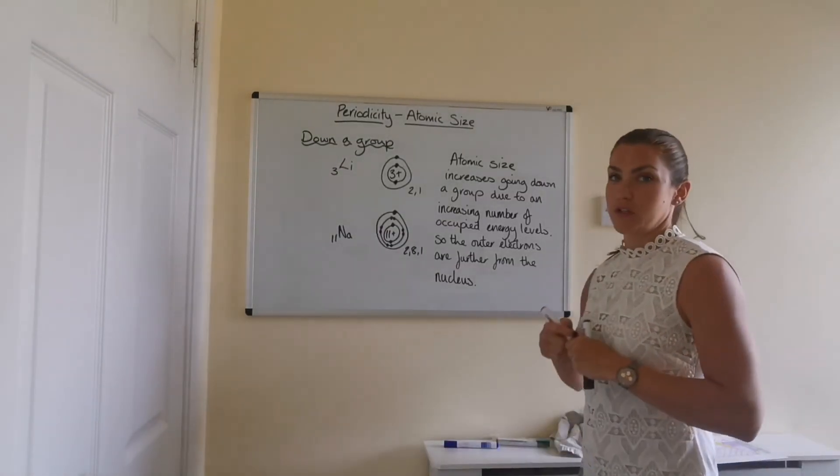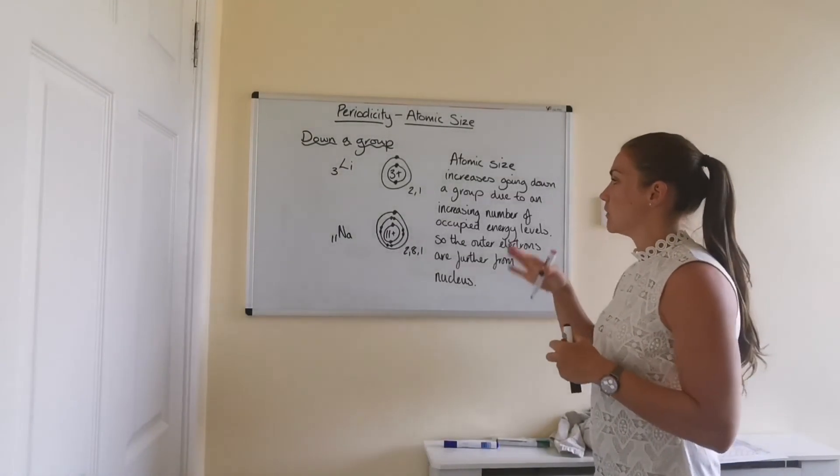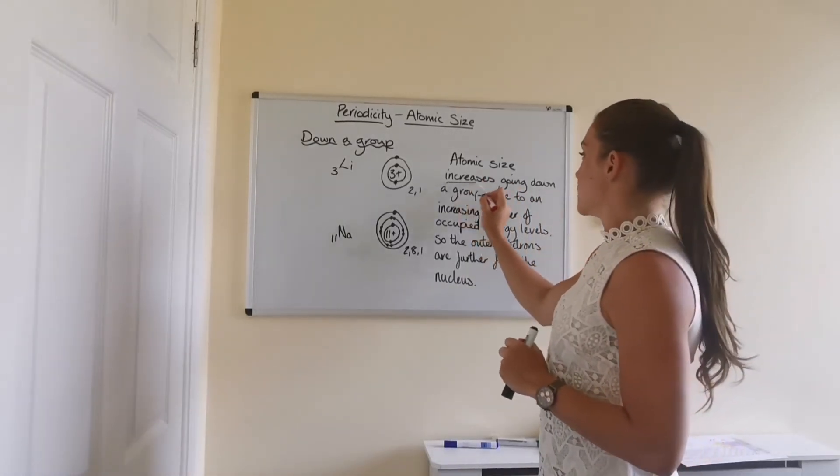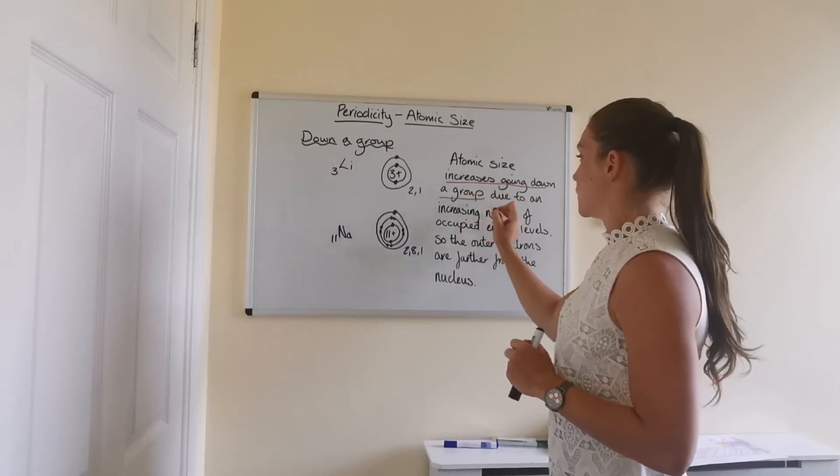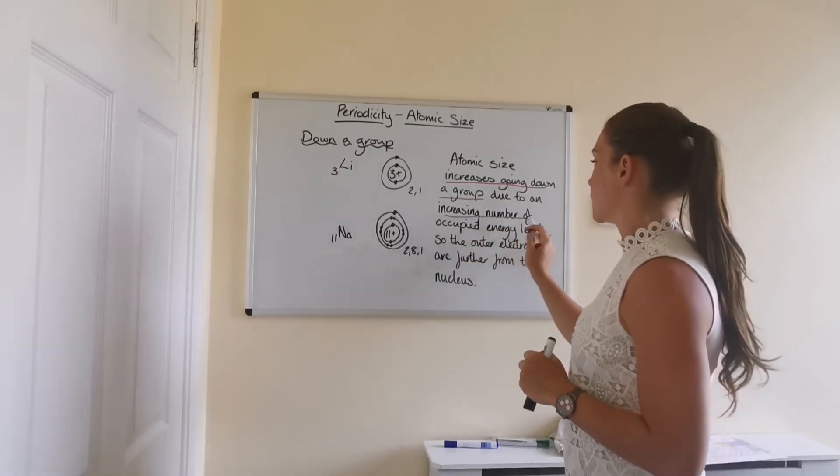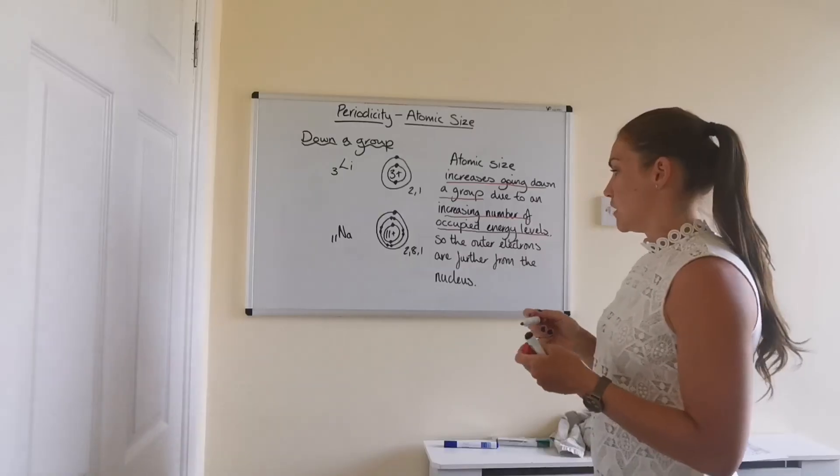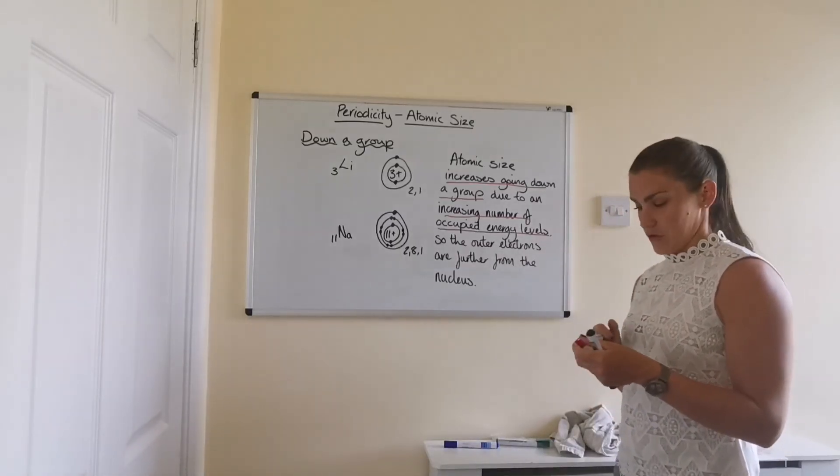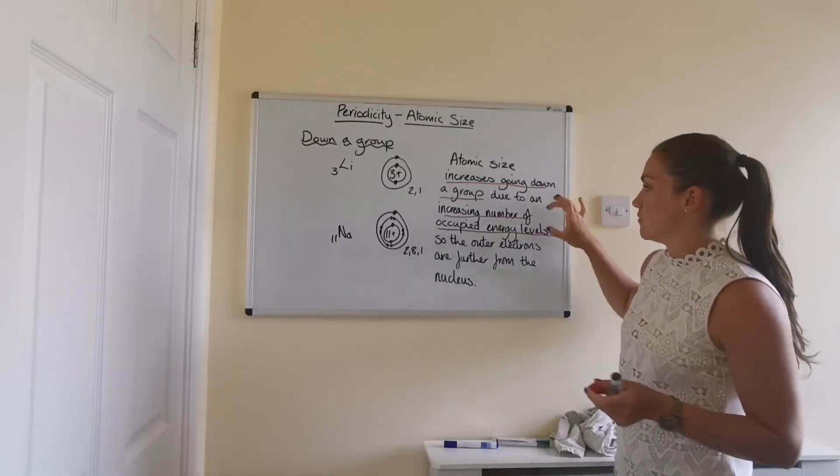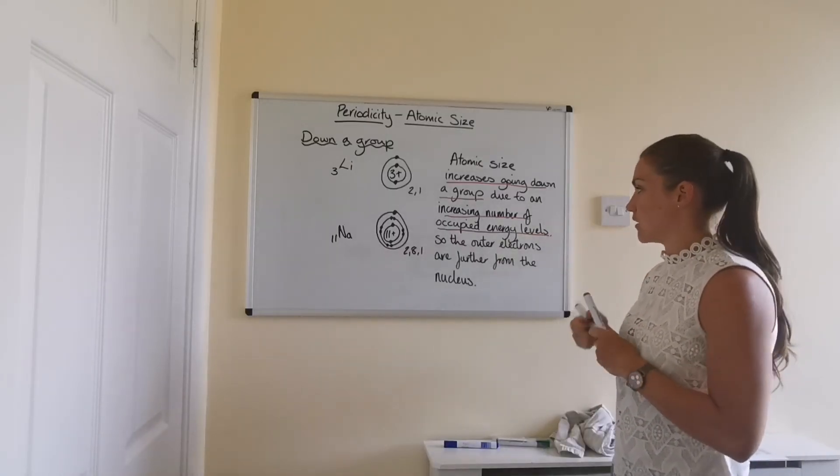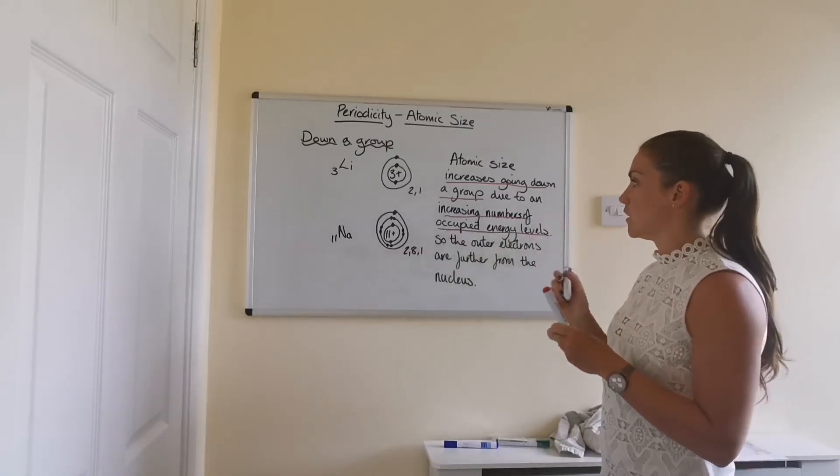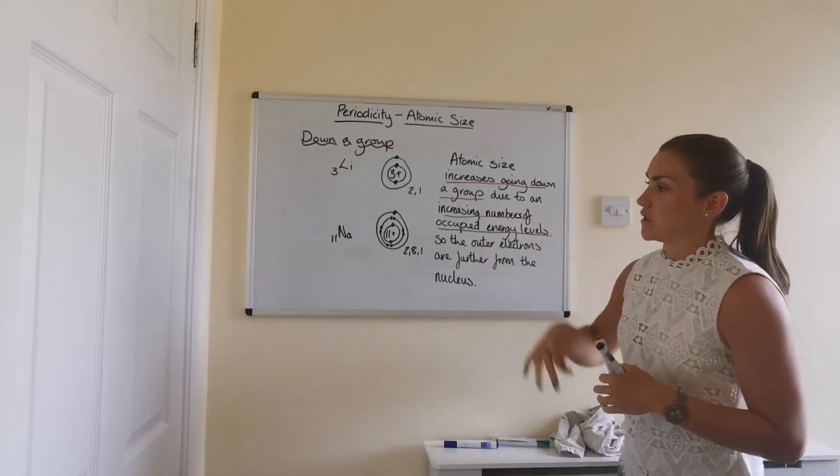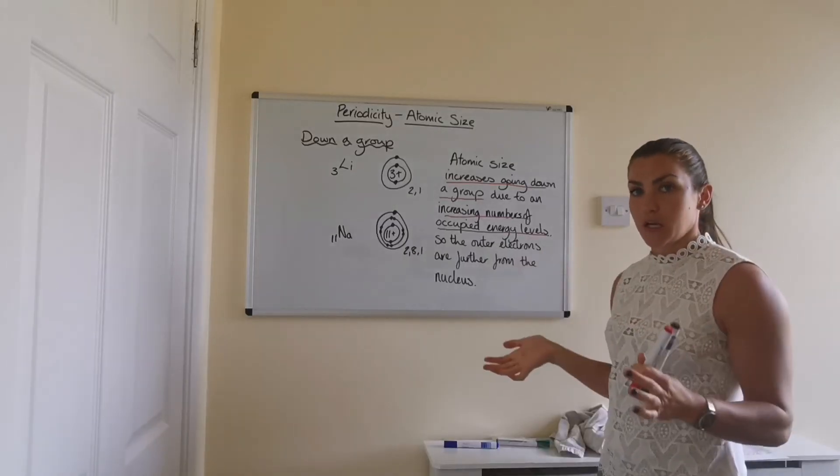So in order to explain this in a written form, we would say the atomic size increases going down a group due to increasing numbers of occupied energy levels. And then that results in the outer electrons being further from the nucleus. But it's the bits that I've underlined in red that are the important bit. So due to increasing numbers of occupied energy levels, as you go down a group, the size of the atoms actually gets bigger.